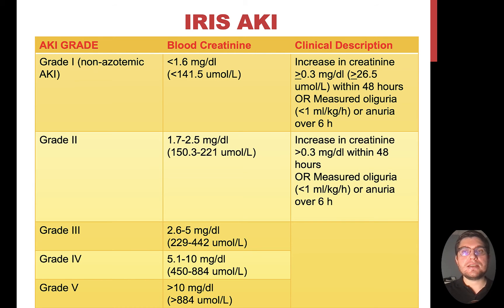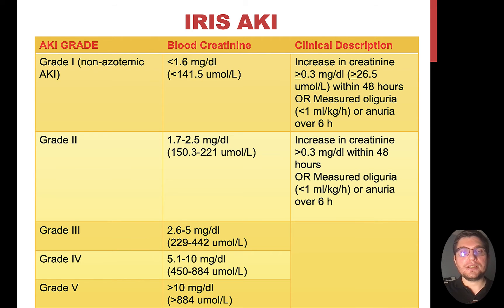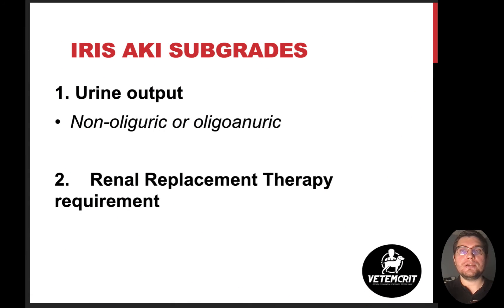Looking at the IRIS AKI classification, there are five different grades. Grade 1 is so-called non-azotemic AKI, meaning the absolute value of serum creatinine is below 1.6 mg/dL or less than 141.5 micromoles per liter. To diagnose grade 1 AKI, the patient should have a rise in serum creatinine by 0.3 mg/dL within 48 hours, or alternatively a decrease in urine output can be used. Grades 2 through 5 represent azotemic AKI — the higher the grade, the worse the azotemia. Each grade can also be subdivided into subgrades depending on urine output, whether non-oliguric or oliguric/anuric, and the necessity to perform renal replacement therapy.